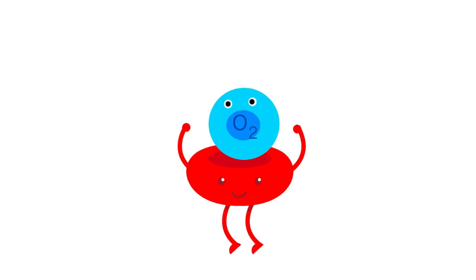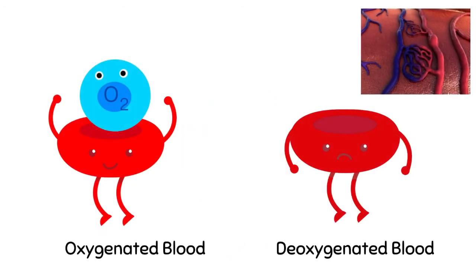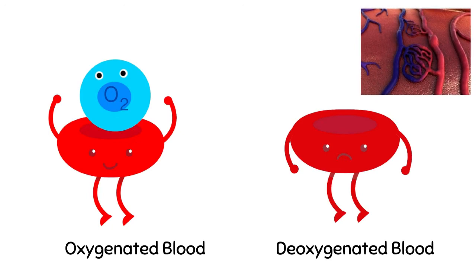As you know, hemoglobin is a protein that binds to oxygen in our blood. The blood that is bound to oxygen is called oxygenated blood and is usually bright red in color, which flows through our arteries. The blood that carries less oxygen is called deoxygenated blood and is usually dark red or purple-blue in color. So the color of our blood depends on how much oxygen it is carrying.